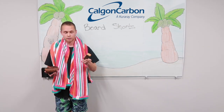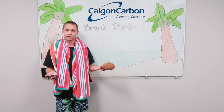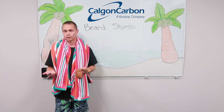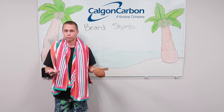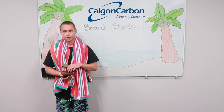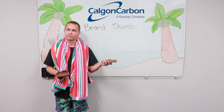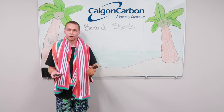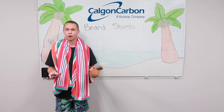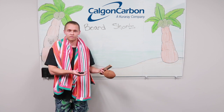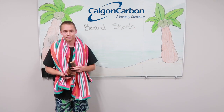The catch is that each one of these different base materials is going to result in a different activated carbon product that works differently from the others. For instance, wood activated carbon products tend to be very soft, whereas coal and coconut-based products tend to be very hard. This is going to affect how the product works in the field and how long it's going to last.